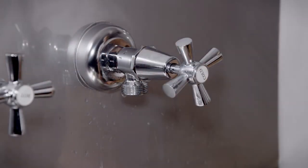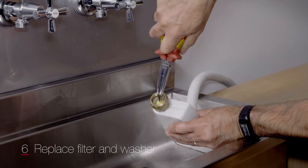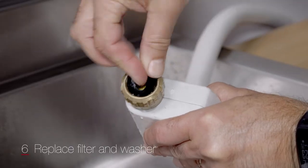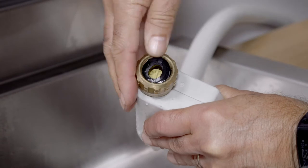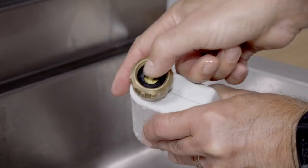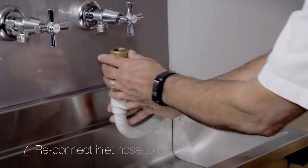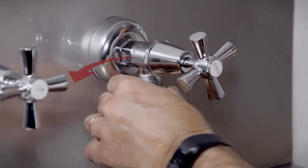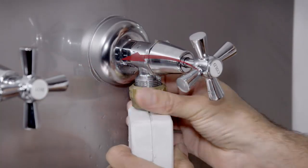Once this is clean, replace the filter and washer, ensuring both are correctly inserted. Reconnect the water inlet hose to the tap, making sure it's not cross-threaded.